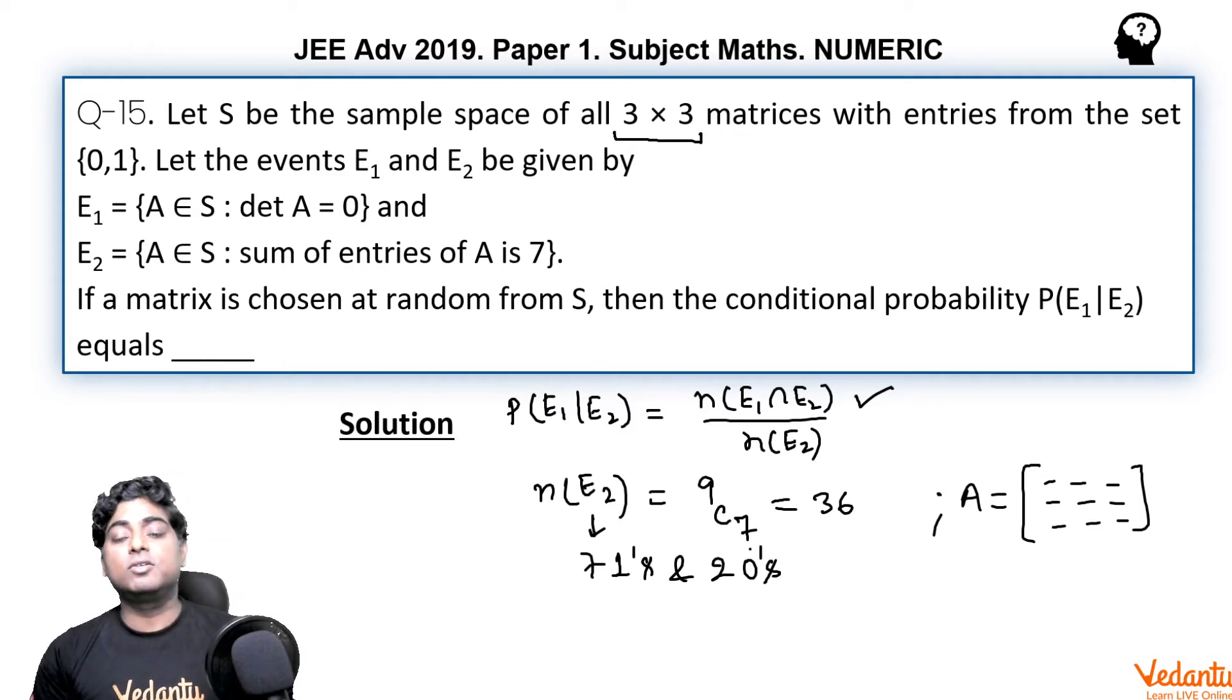E2 means there are 7 ones and only 2 zeros. So if you give little stress to the mind, you will easily get the cases in which, cases inside E2 in which, inside E2 means 7 ones and 2 zeros must be placed in such a manner that the determinant should be 0. Now if you choose 2 places where 0 should be kept in same row or same column, then what will happen?